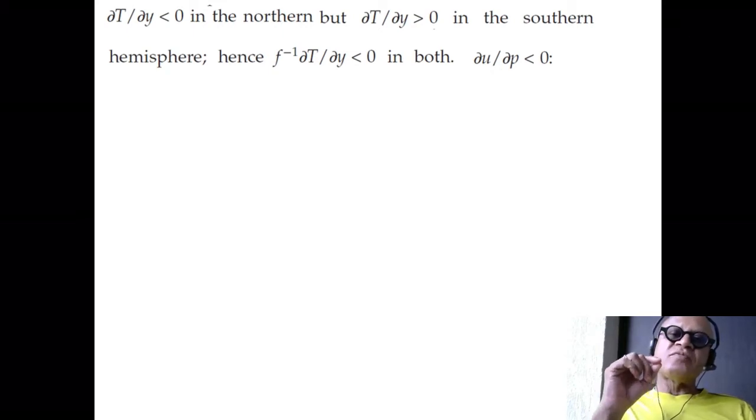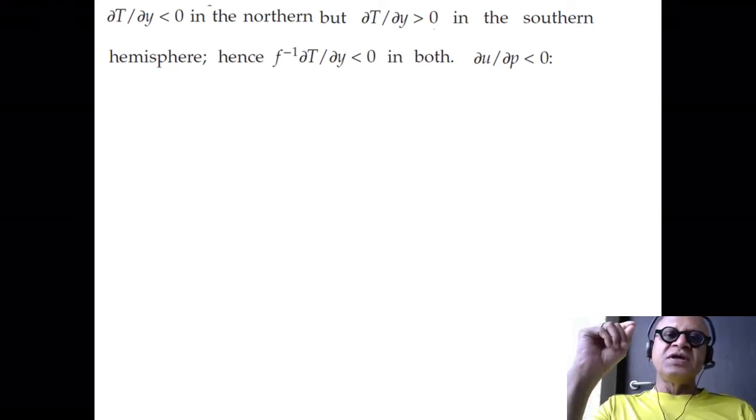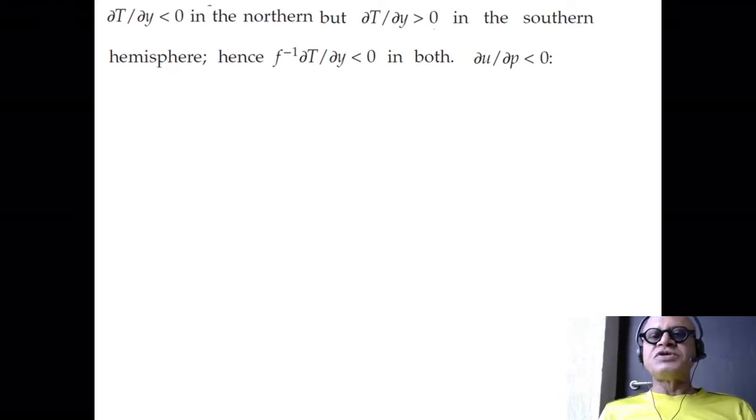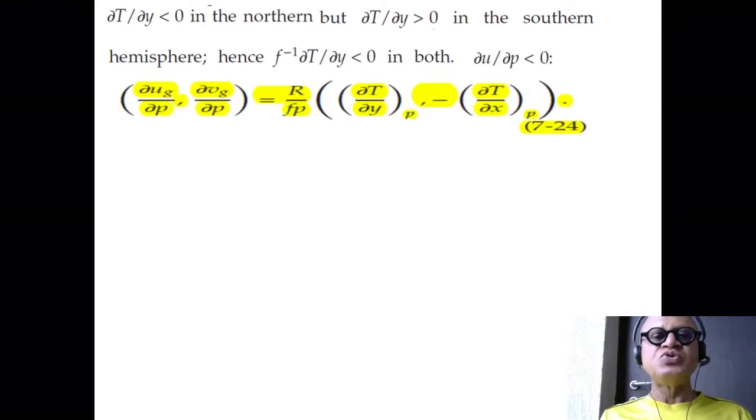If our z coordinate is going from the surface into the atmosphere, z is positive and u is increasing, but pressure is decreasing. So you have to get used to the idea that when you say pressure coordinate, while z increases, pressure decreases. Sea level pressure is higher than pressure above the surface. So dU/dP then becomes less than zero.